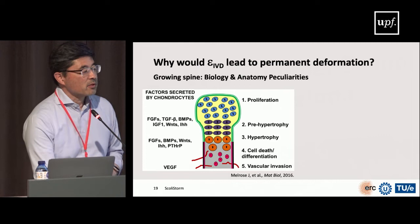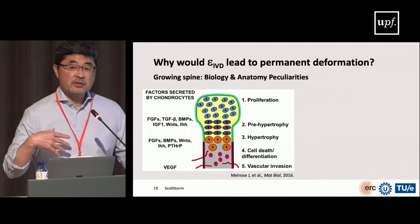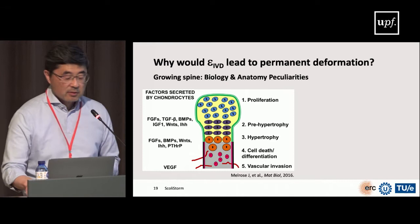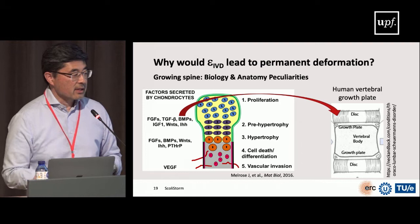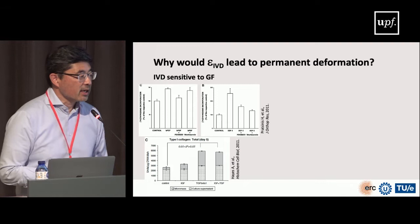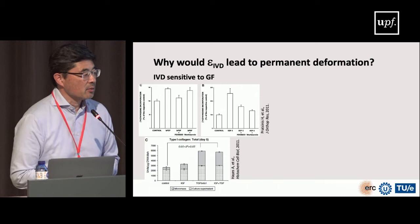Looking at those wedged discs and comparing the concave to the convex side, we see differences in collagen architecture, elastin architecture, and in enzymes that affect collagen and GAG architecture such as MMPs. The hypothesis is that growth plate morphogens, because of their adjacency to the disc, can affect the growing disc.